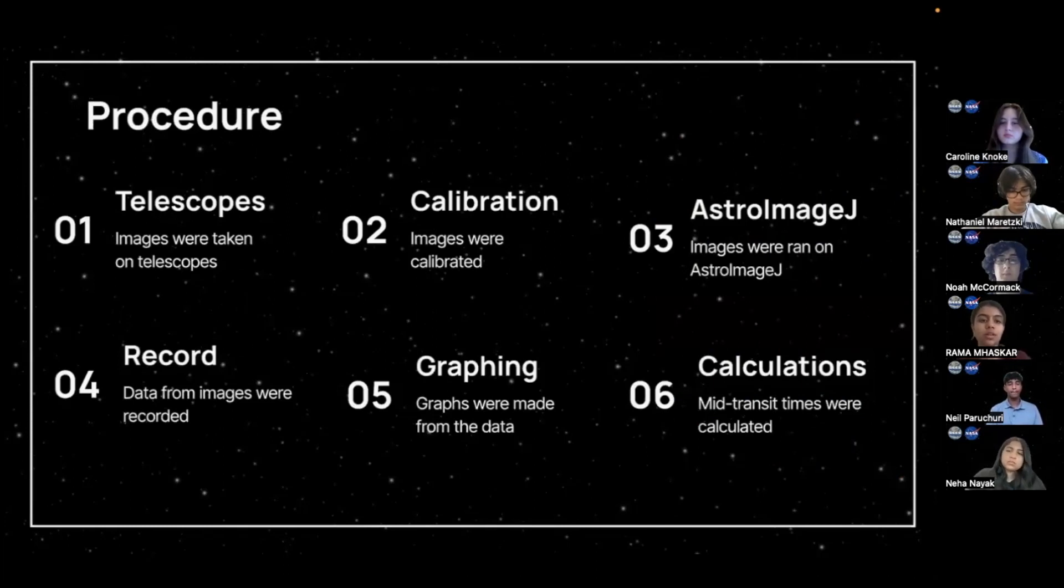So, here was our procedure for this project. Firstly, images were taken on telescopes. Second, these images were calibrated to reduce imperfections in the data. Third, the images were ran on AstroImageJ, which is an astronomical software. Fourth, this data from images were recorded using spreadsheets. Fifth, we made graphs from this data to indicate or show the transits. And sixth, calculations were made on topics such as mid-transit times.